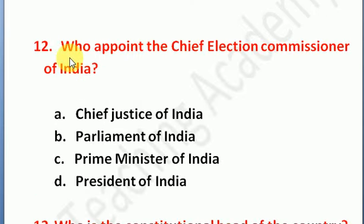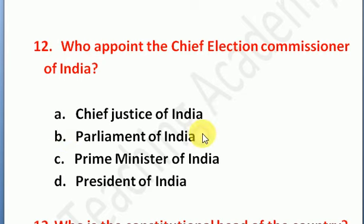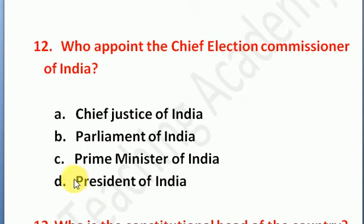Question number 12: who appoints the Chief Election Commissioner of India? Option A: Chief Justice of India, Option B: Parliament of India, Option C: Prime Minister of India, Option D: President. The right answer is Option D — the President of India appoints the Chief Election Commissioner of India.